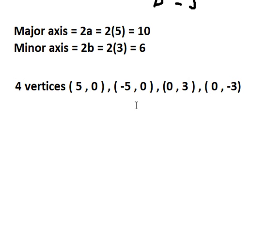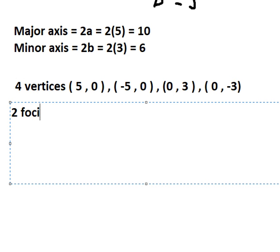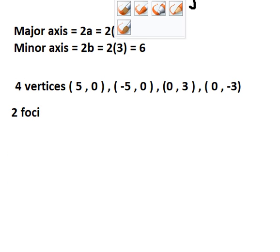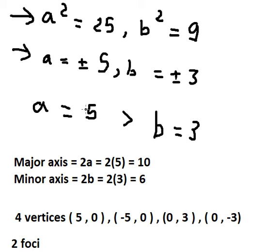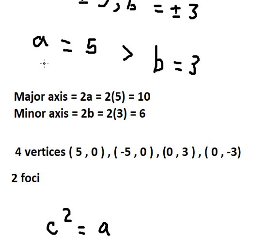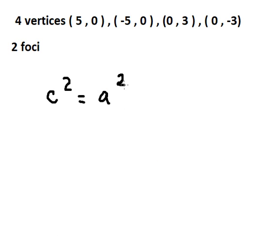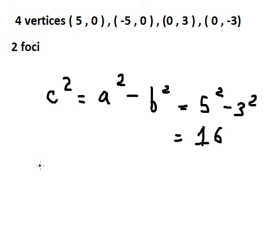About foci, we have 2 foci here. To find the foci, we have the formula. So because a is bigger than b, we have a squared minus b squared. So we calculate this one, and that is number 16. So we put the square root for both sides, so we have like this.